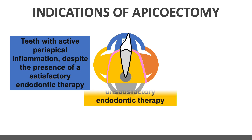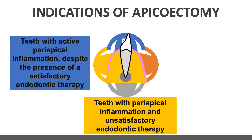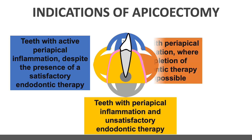The second indication is teeth with periapical inflammation and unsatisfactory endodontic therapy — where RCT was not performed properly due to reasons such as a calcified root canal, severely curved root canal, presence of a post or core in the root canal, or endodontic instrument separation. In such cases you have to perform an apicectomy.